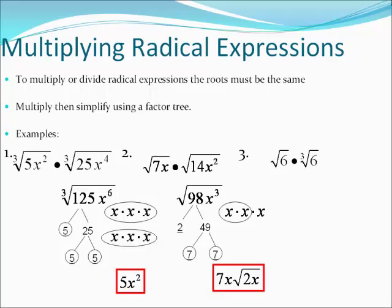On number three, we cannot multiply a square root and a cube root — they have to be the same kind of root. Square and cube are not the same, so you cannot multiply these two together. This is not possible; they are different types of roots.